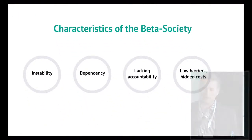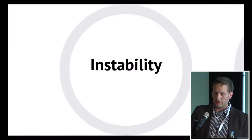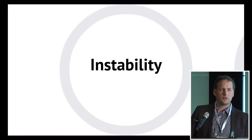So what are the characteristics of what I would call the beta society? I think the term society is okay here simply because of the scale we are talking about — how many people use these services. The characteristics are: instability, dependency, lacking accountability, low barriers, and hidden costs. Instability is pretty clear — we know that these services are changing all the time, and we as users have constantly to adapt to it.